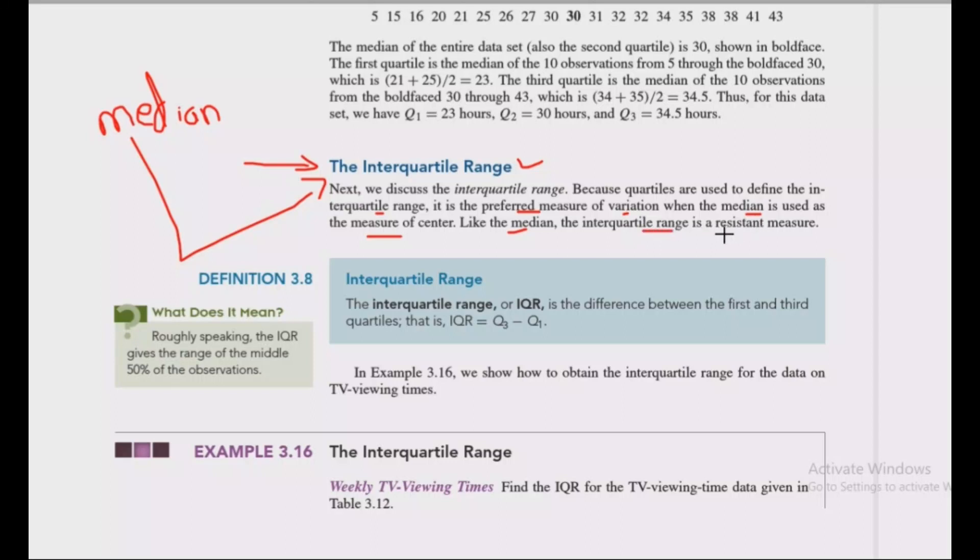Interquartile range is the resistance measure to the extreme observation. Likewise, median is the extreme observation data. The median is the average measure of variation. We have the interquartile range and the minimum. The interquartile range is defined as the lower. We find the formula: quartile 3 minus quartile 2.